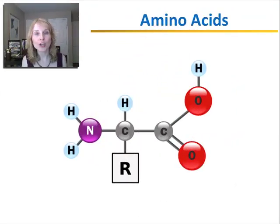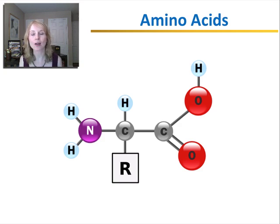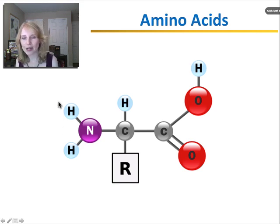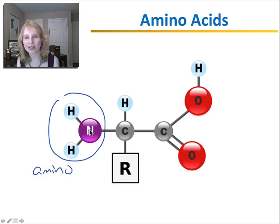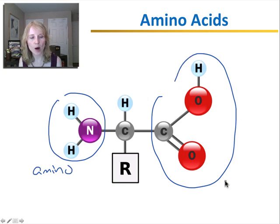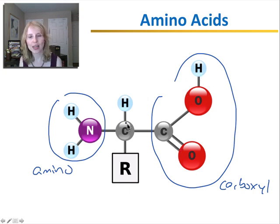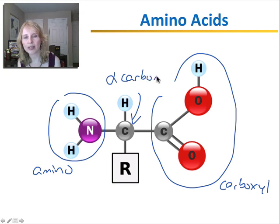First, let's talk about the structure of a typical amino acid. Remember, amino acids are the monomers — the building blocks of proteins. On one end of an amino acid you have the amino group, which is made up of a nitrogen with two hydrogens. On the other end is the carboxyl group, made up of a carbon with a double-bonded oxygen and an OH. In the middle we have the alpha carbon, or the central carbon, which links together the amino group and the carboxyl group, and also has a hydrogen.